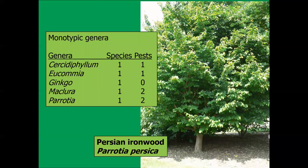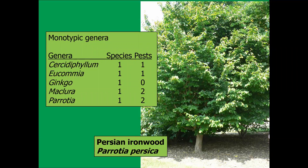When you're down to one species in a genus, the number of problems is few or none, at least in terms of serious pests. So as a general rule, if you're a city forester, urban planner, landscape architect, arborist, or landscaper looking at what genera to plant in your communities, one of the things we have to look at for sustainable landscapes is freedom from pests and also the threat from exotics.